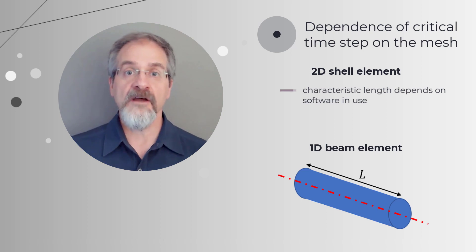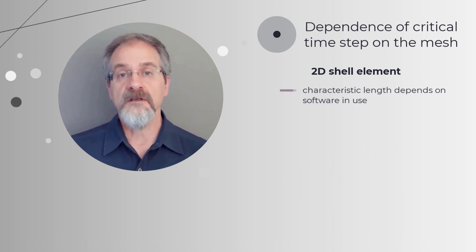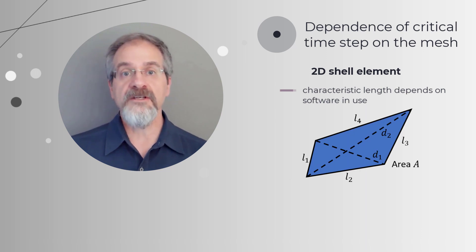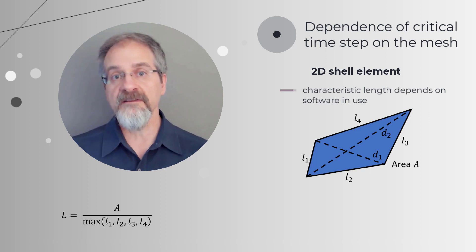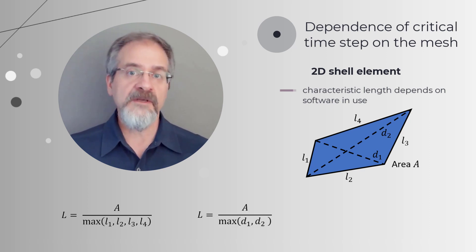For 2D shell elements, the characteristic length may be calculated in different ways depending upon the software in use. It may be calculated as the ratio of the area of the element to the largest element edge length or the largest diagonal length, or it may be calculated as the square root of the area.